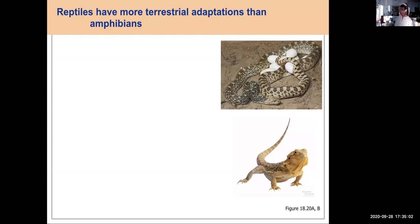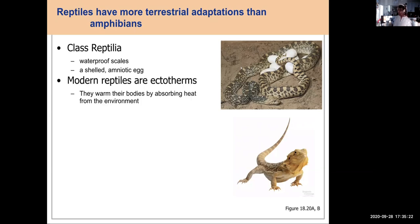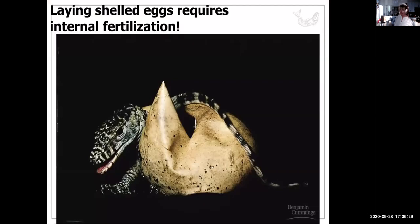Reptiles have more terrestrial adaptations than amphibians have. Waterproof scales, and they have a shelled amniotic egg. So from now on, the animals that we talk about are called amniotes because they have a specialized egg. Reptiles are ectotherms. They warm their body by absorbing heat from the environment. They don't have internal body regulation. But to lay a shelled egg, there must be internal fertilization. So that is another development that must have happened in order for animals to live entirely on land. And indeed that is what happened with reptiles.